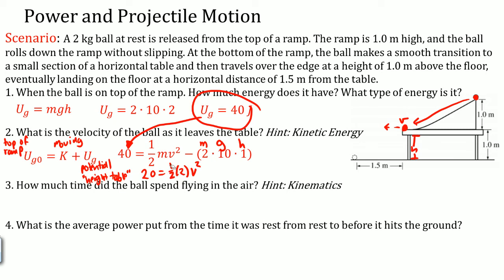If you do this, you should get something like 20 equals to one half, M is two and V squared. Two over two basically cancel each other out, so you have 20 over V squared. Basically it equals to 4.5 meters per second. That is the velocity at which it leaves.